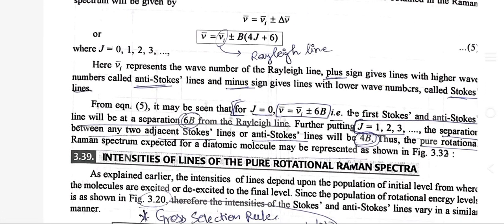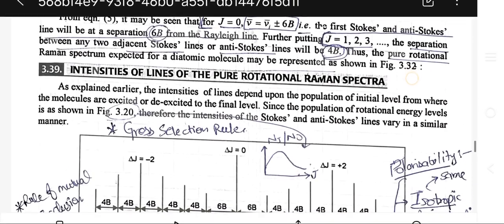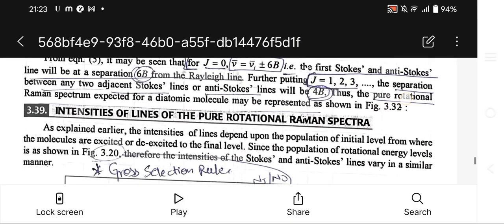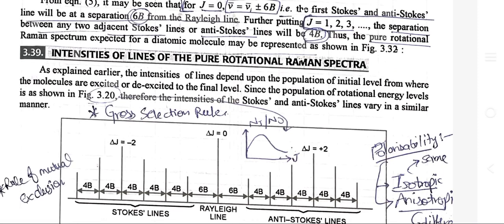Here μ̄ᵢ represents the wave number of the Rayleigh line. The positive sign gives lines with higher wave number called anti-Stokes lines, and the negative sign gives lines with lower wave number called Stokes lines. From this equation it may be seen that for J = 0, μ̄ = μ̄ᵢ ± 6B — that is, the first Stokes and anti-Stokes lines will be at a separation of 6B from the Rayleigh line.